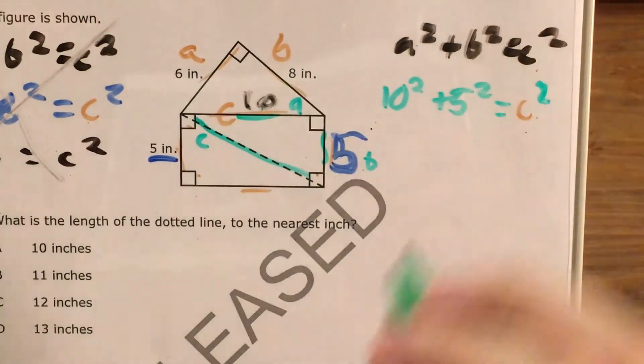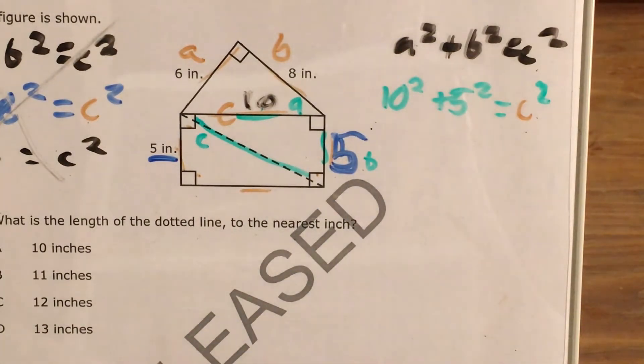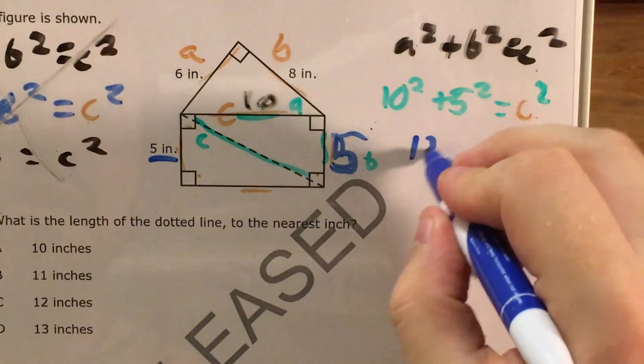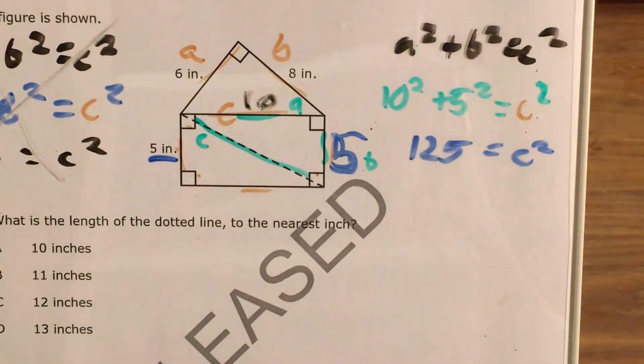Now this problem is going to work exactly the same as the other problem. I figure out 10 squared, which is 100. I figure out 5 squared, which is 25. 100 plus 25 gets me 125. So I know that 125 equals C squared.